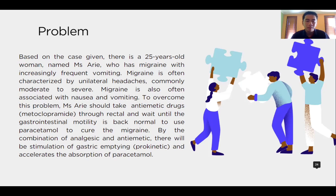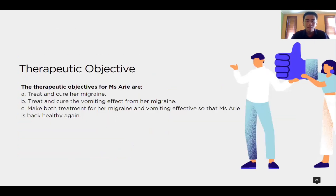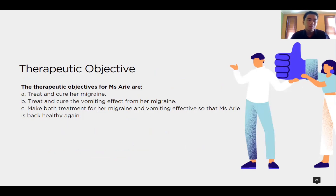By the combination of analgesic and anti-emetic, there will be stimulation of gastric emptying, which is prokinetic, and accelerates the absorption of paracetamol. The therapeutic objectives for Ms. Ari are: first, to treat and cure her migraine; second, to treat and cure the vomiting from her migraine; third, to make both treatments for her migraine and vomiting effective so that Ms. Ari is back healthy again.